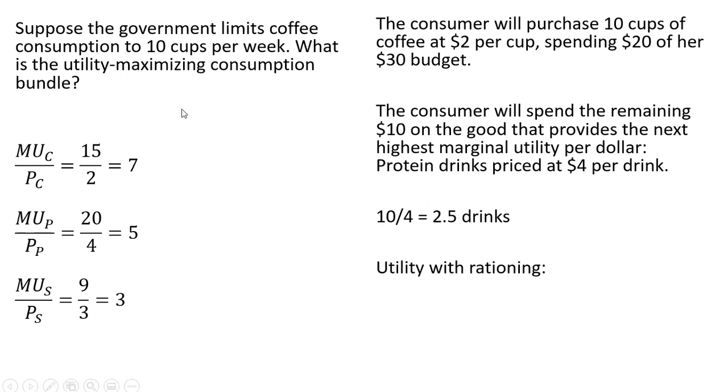Utility with rationing, when we're rationing the number of cups of coffee, equals 200. That's 10 cups of coffee, 2.5 protein drinks, and no sports drinks, giving a total utility of 200.